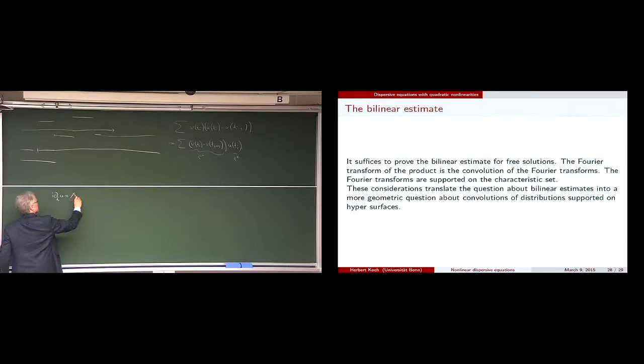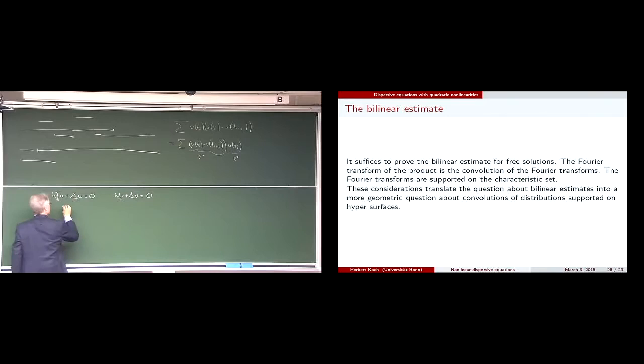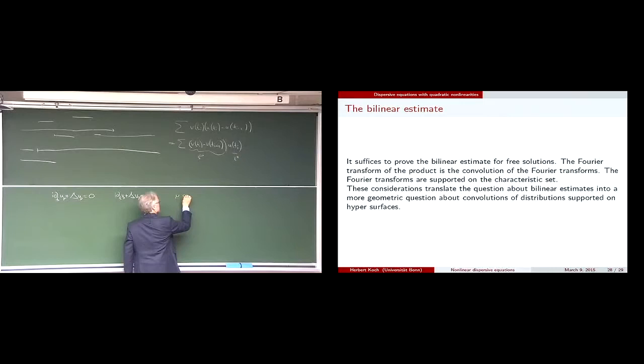We have to look at L^2 estimates of a convolution of two surface-supported measures. You evaluate at a point xi and look at where it comes from on the surfaces — points in the support of u and points in the support of v which add up to a given point. You put that in L^2, use Cauchy-Schwarz and the coarea formula, and you get an expression that gives this bilinear estimate. So this is very geometric in nature.